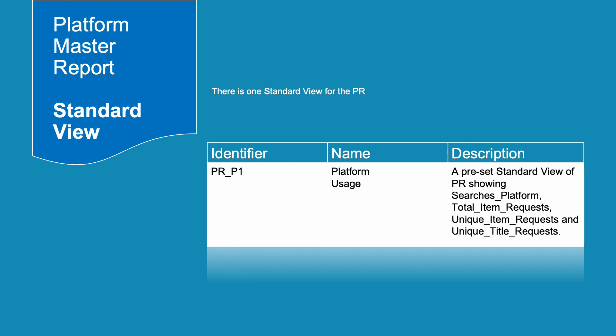There is one standard view for the PR. PR P1 is a preset standard view showing total and unique item requests, as well as platform searches.